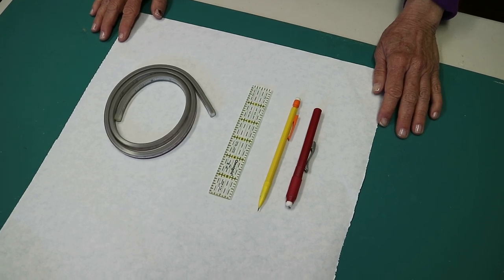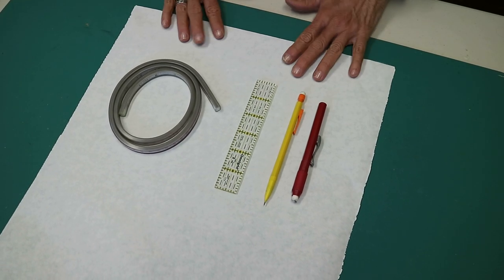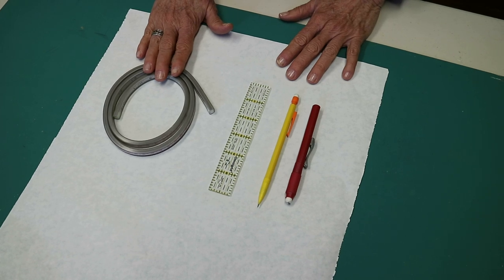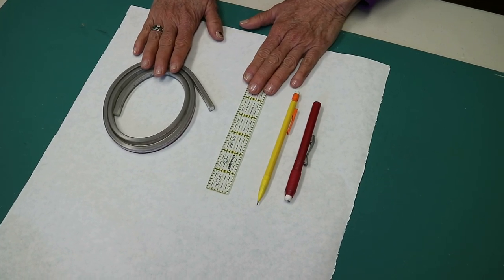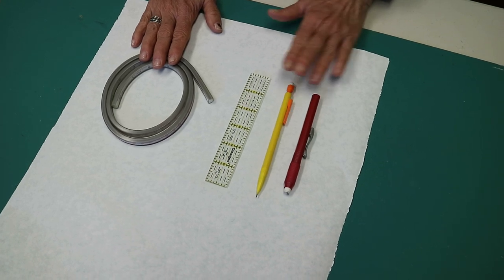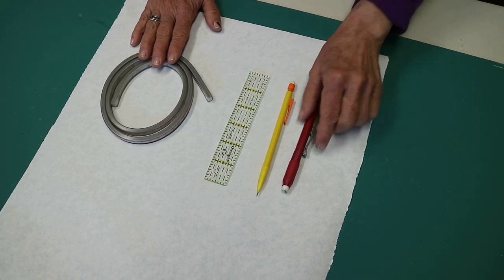Today we're going to learn how to make freeform flying geese using four tools: a flexible curve available on my website, a small ruler, a mechanical pencil, and an eraser in case you change your mind and don't like what you draw.